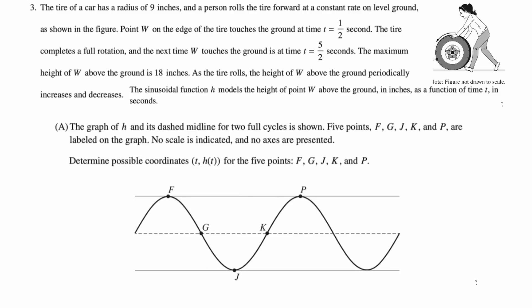Tire of a car has a radius of nine inches and a person rolls the tire at a constant rate on level ground as shown in the figure. Point W on the edge of the tire touches the ground at time t equals one half. The tire completes a full rotation and the next time it touches the ground is at t equals five halves. So we can use that to find the period of this thing. The maximum height is 18 inches above the ground.